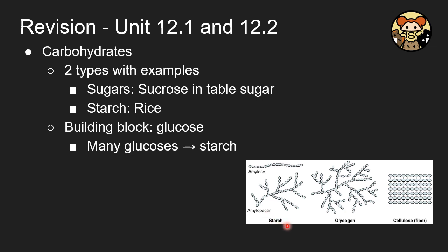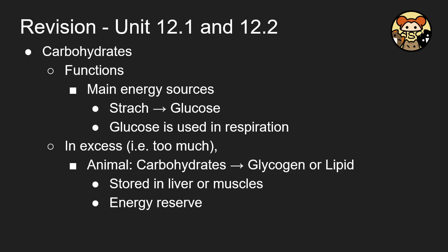In the cartoon diagram, starch is made up of many glucose units. The function of carbohydrates is to be the main energy source for humans. Starch is broken down into glucose, which is used in respiration. If there is excess carbohydrate, it is converted to glycogen or lipid and stored in the liver and muscles as energy reserve.